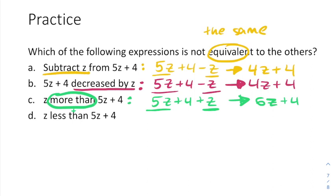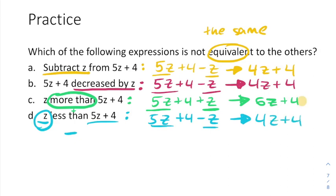Now, we don't really need to do the last one at this point, but we could do it just to prove it. Z less than. Well, less than means subtraction. So 5z plus four, and then let's subtract a z again. Remember, we talked about that with this wording less than. It means subtract afterwards. So take this 5z plus four, and then subtract z. This again equals 4z plus four, and we could tell that the only one of these that is different is this third option. So our answer here is going to be c. That's the one that's different than the others.